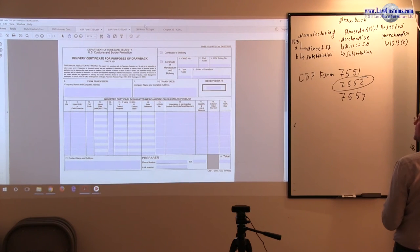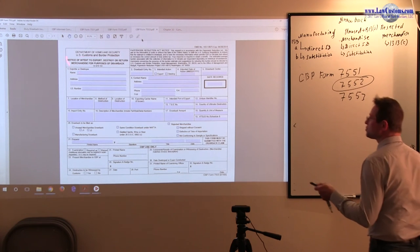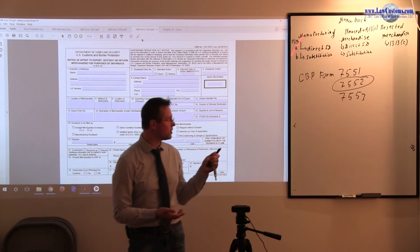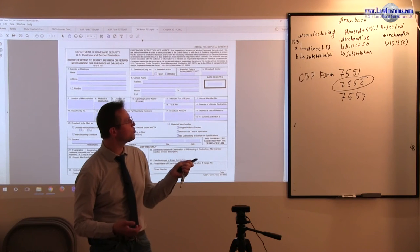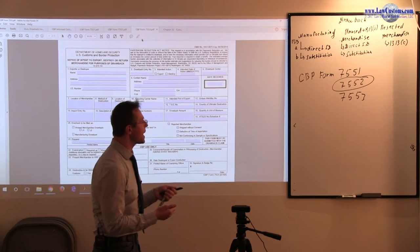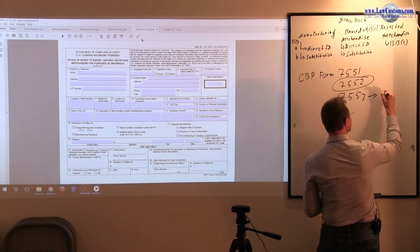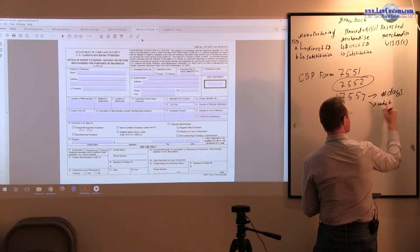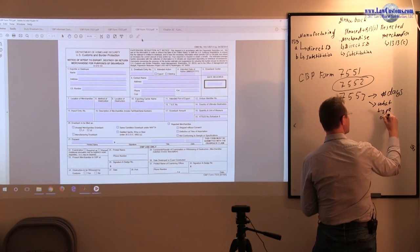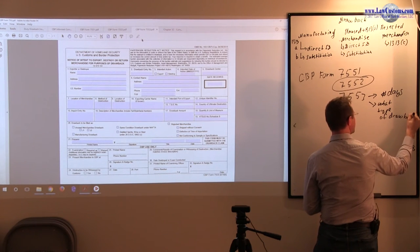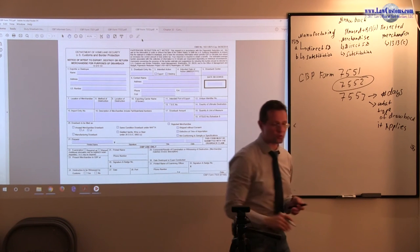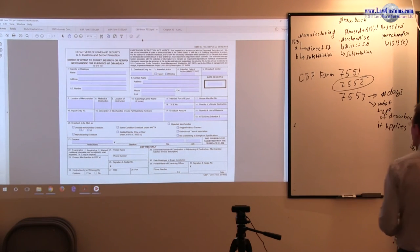7553 has to do with Notice of Intent to Export or Destroy. The destruction is applicable to all types of drawback. The Notice of Export is applicable to unused merchandise and rejected, but not manufacturing. The key thing to remember here is the number of days and to what type of drawback it is applicable. So keep those points in mind as we go through the outline and we discuss those forms.